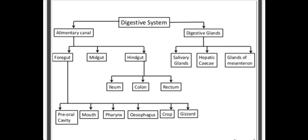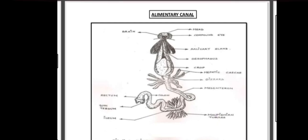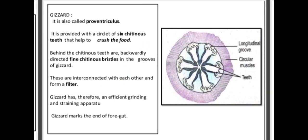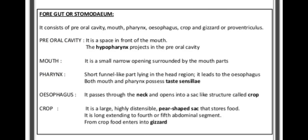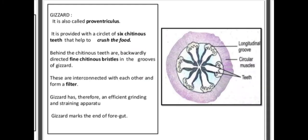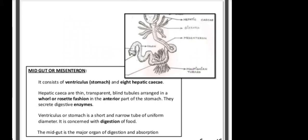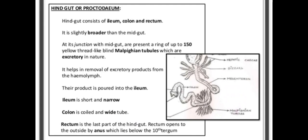Besides the hepatic caeca, there are glands of the mesenteron which also secrete enzymes for digestion of the food.